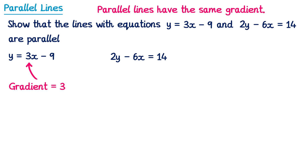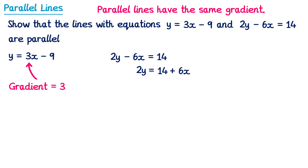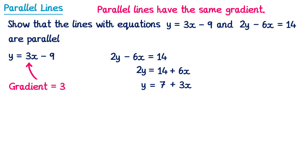The second line is not in the form y equals mx plus c, so we need to do some rearrangement first. First of all, add 6x to both sides: on the left the negative 6x cancels so you just have 2y, and on the right we've got 14 plus 6x. Then divide both sides by 2: 2y divided by 2 is just y, 14 divided by 2 is 7, and 6x divided by 2 is 3x. Reordering the right-hand side gives y equals 3x plus 7.